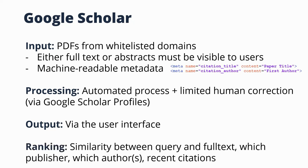In terms of ranking, Google Scholar looks at the similarity between the query and the full text, but also has an internal prestige ranking of publishers and authors, which influences search results. Papers that have been recently and often cited also rise in the ranks.